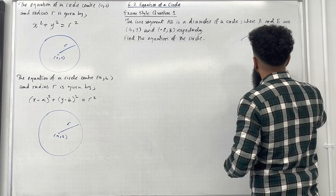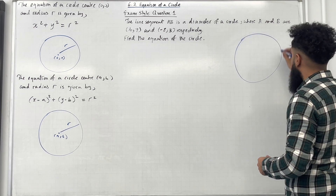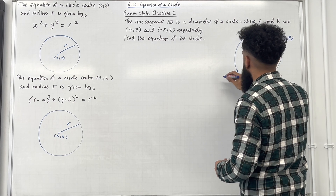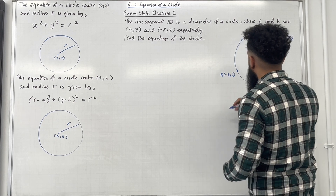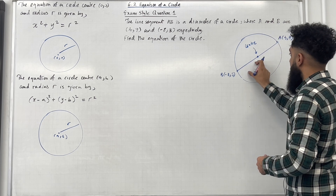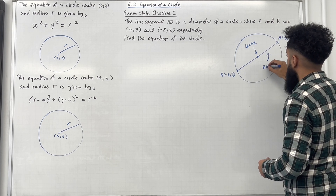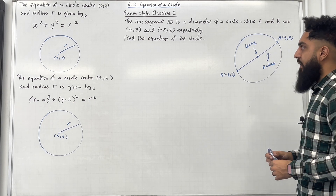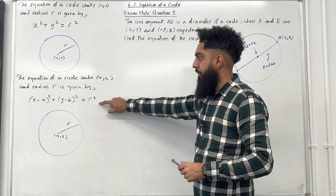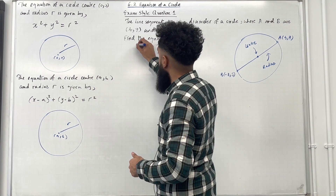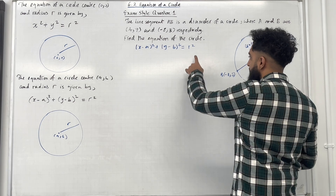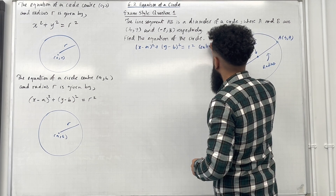We know that we've got a circle. The point A (4, 7) will be roughly over here, and the point B (-8, 3) would be roughly over here. The line A to B is the diameter of the circle which passes through the centre. This length and this length both represent the radius. The general equation of a circle with centre (a, b) and radius R is given by: x minus a in bracket squared plus y minus b in bracket squared equal R squared.